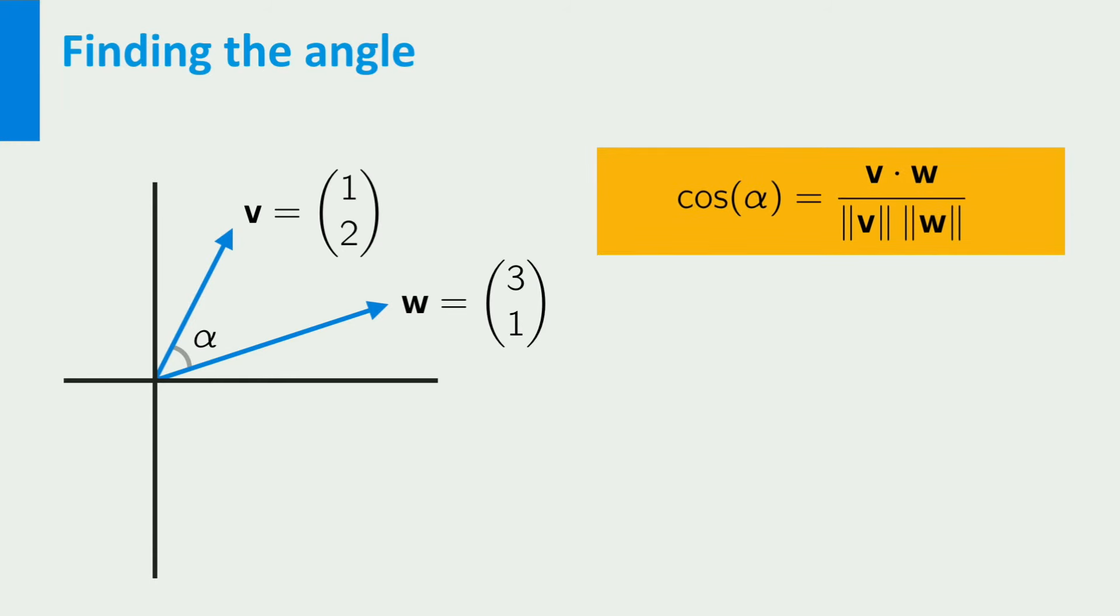The dot product can be easily calculated: 1 times 3 plus 2 times 1 equals 5. We can also calculate the norms. The norm of v is square root of 5. The norm of w is square root of 10. Plug this into the formula, then we find that the cosine of alpha is equal to 5 divided by square root of 5 times square root of 10. This can be simplified to 1 half times square root of 2. If you like, you can pause the video to check all these calculations for yourself.